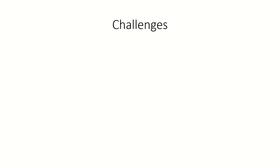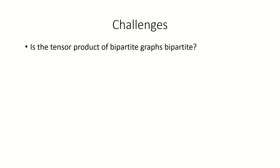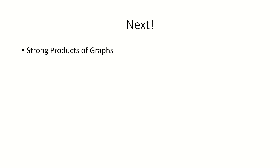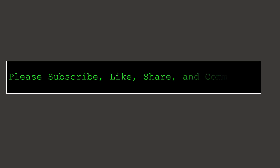That's it for this video, but I'd like to leave you with a few challenges. Is the tensor product of two bipartite graphs also bipartite? And is the tensor product of two disconnected graphs disconnected? Let me know what you think in the comments. In my next video, we're going to look at strong products of graphs, and after that, King's graphs — a chess-related graph defined using a strong product of two path graphs. Thanks for watching. Please subscribe, like, share, and comment. Have a great day.